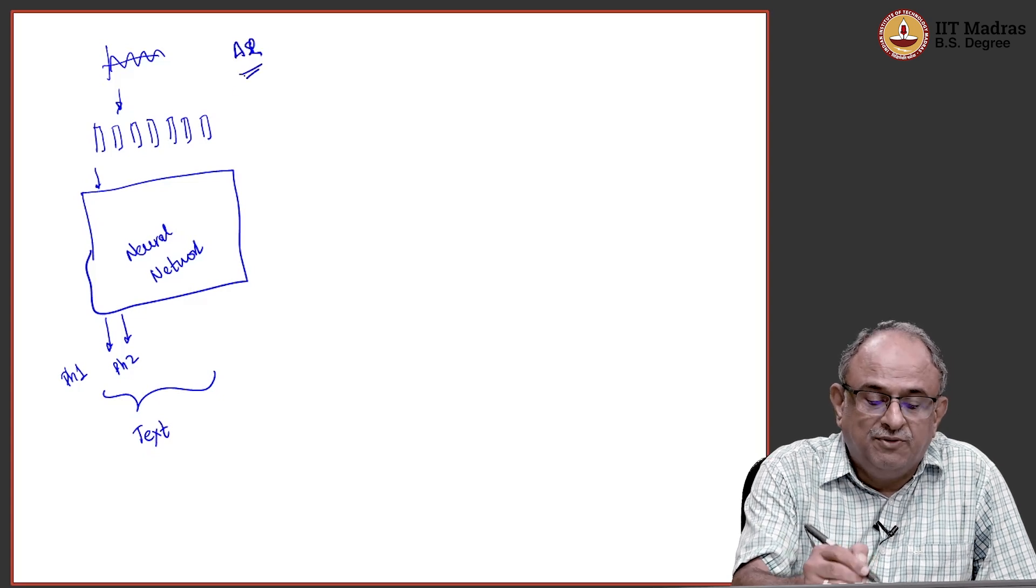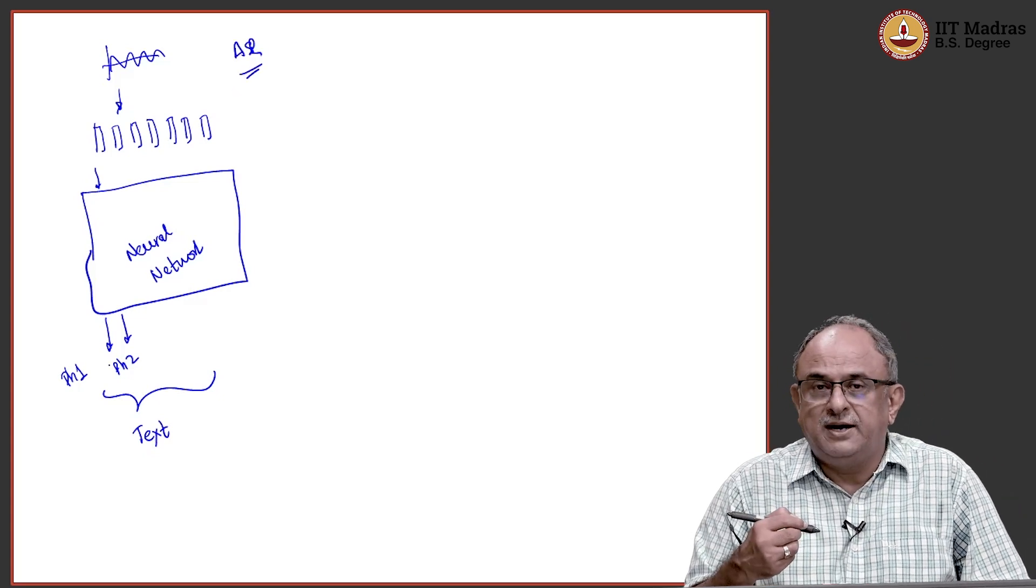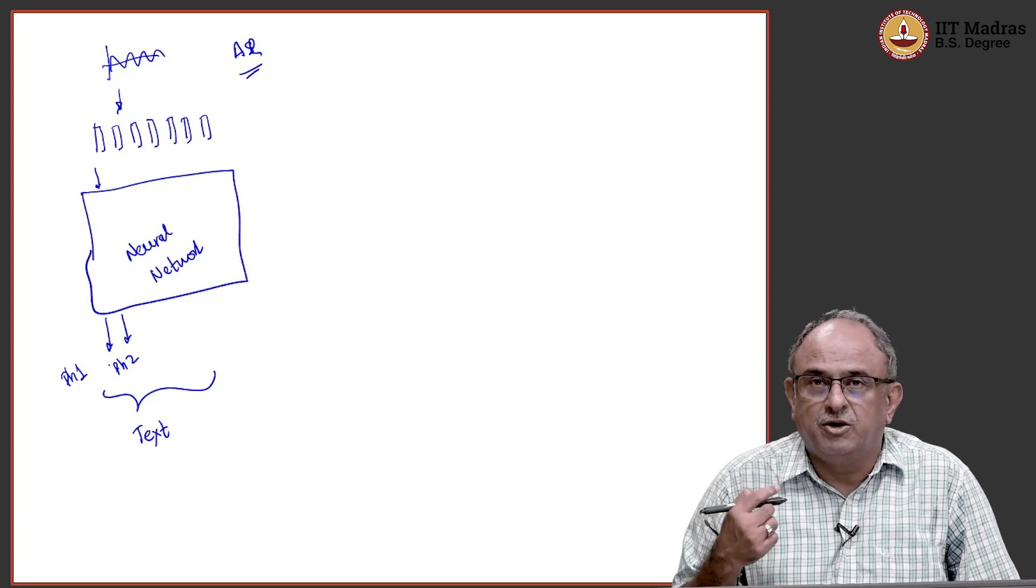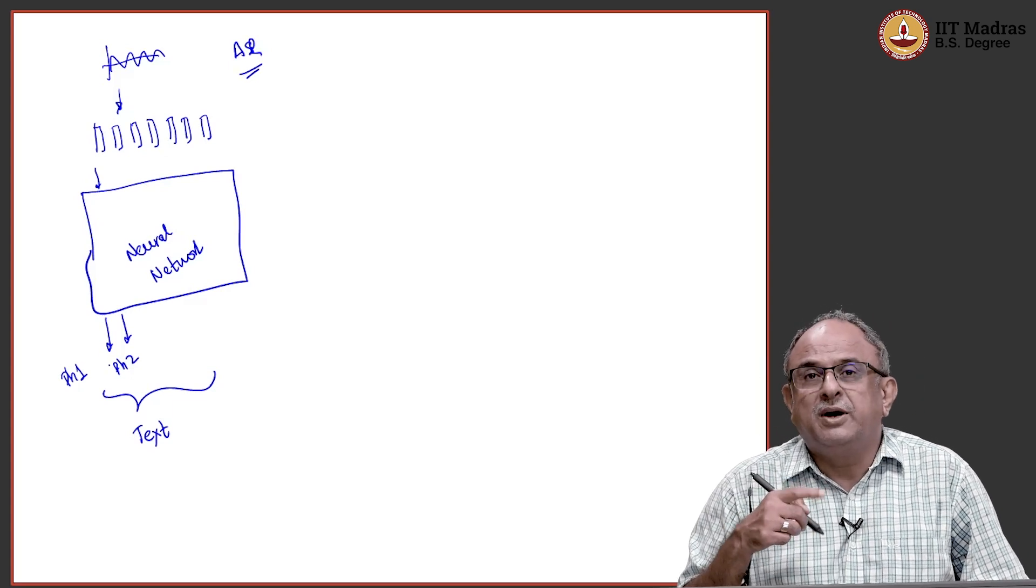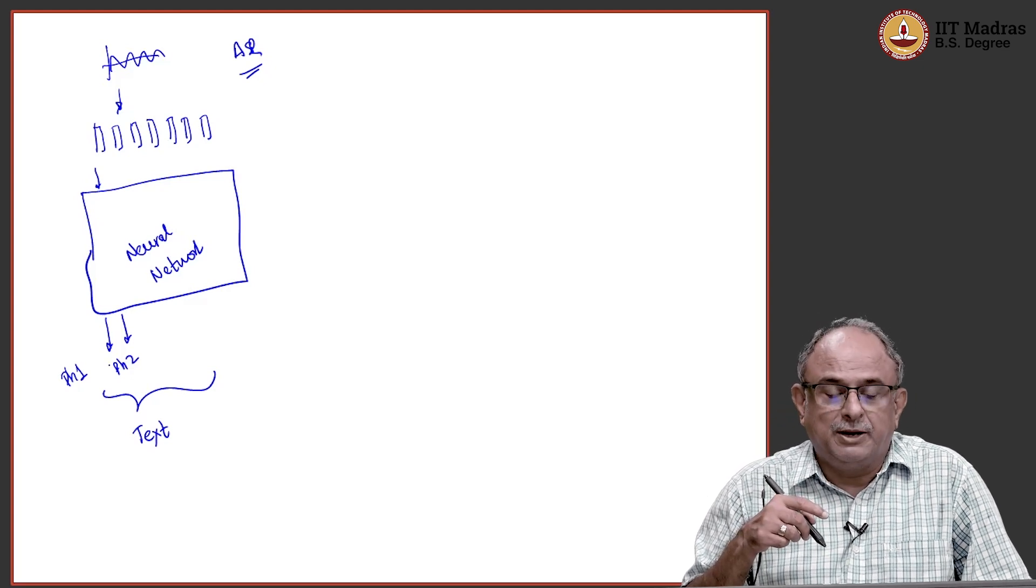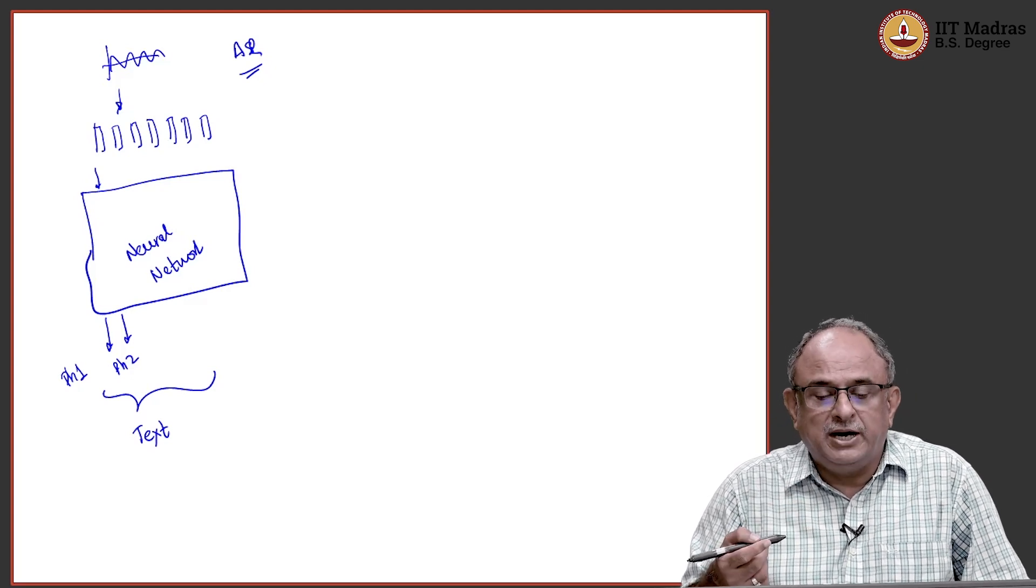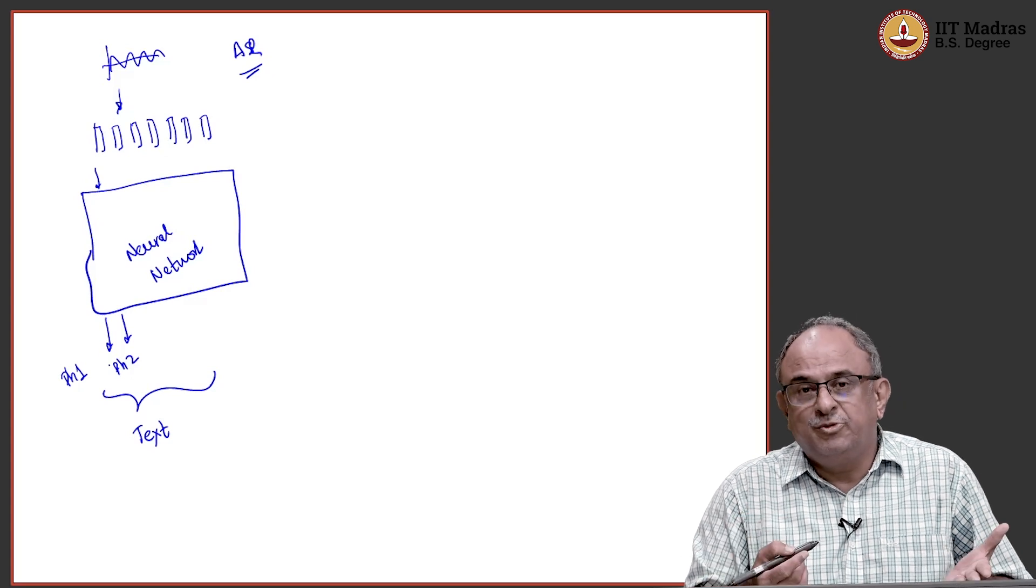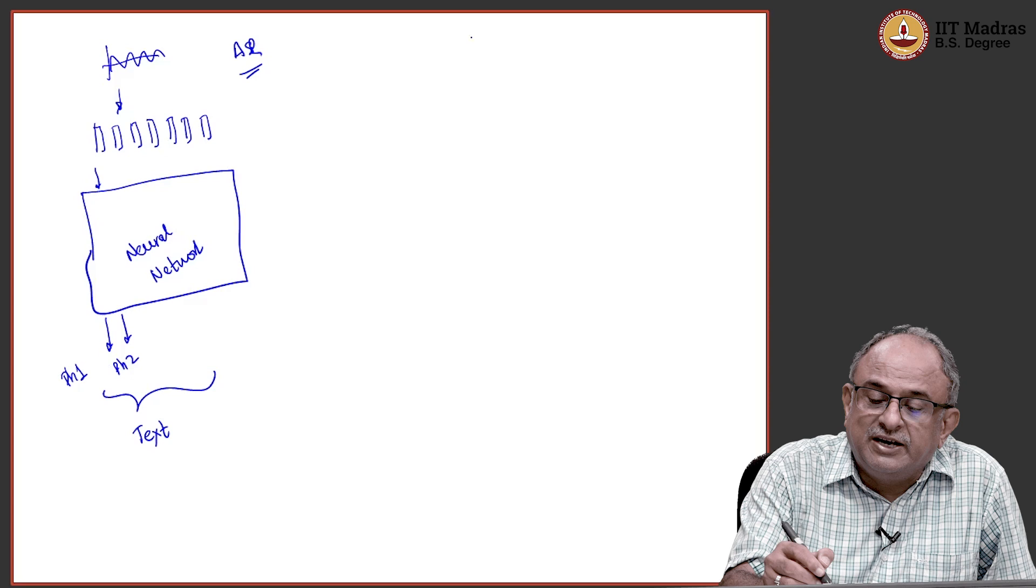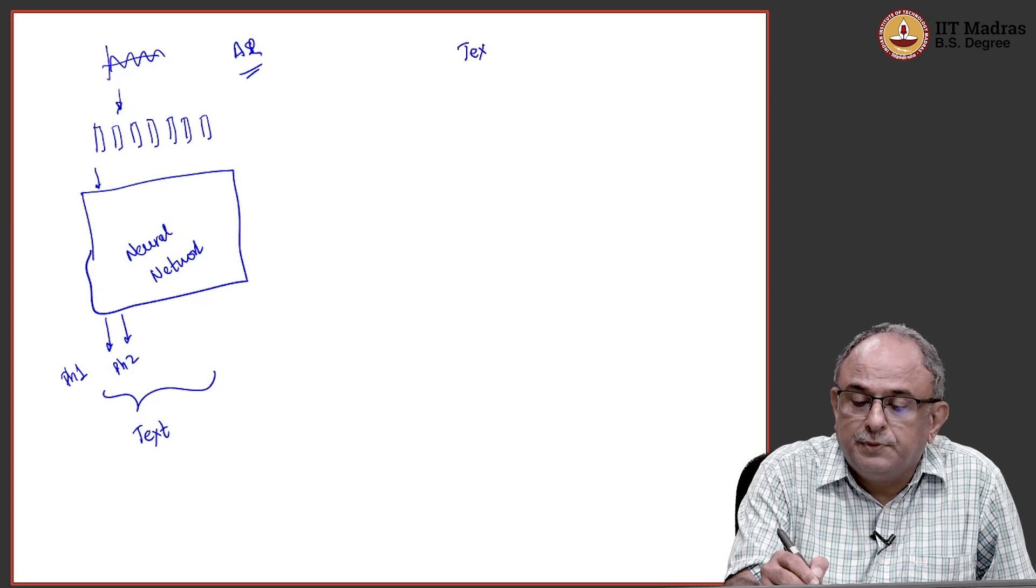But sometimes I will skip the going to the phoneme part, I will directly go to the text part, I can do it through CTC or any other ideas by, you know, sort of skipping the phoneme step. But if you look at it, this picture itself gives me a very good idea how I should be doing text to speech.